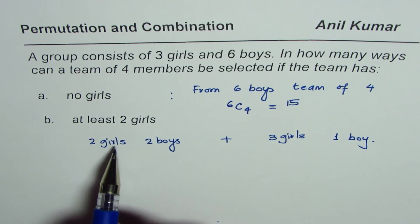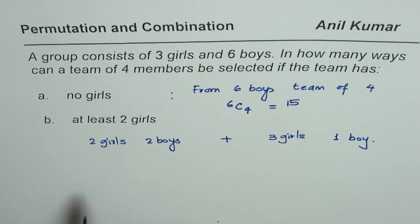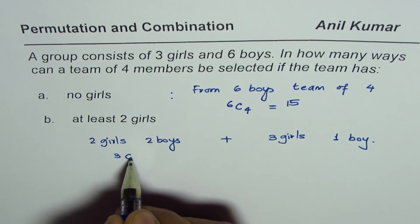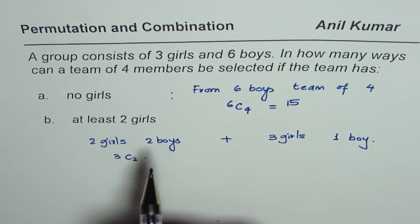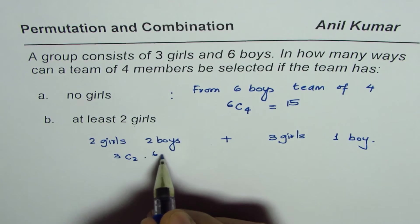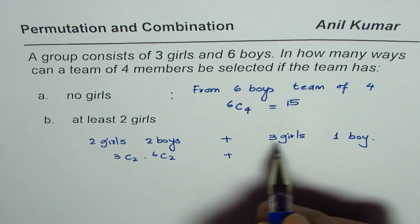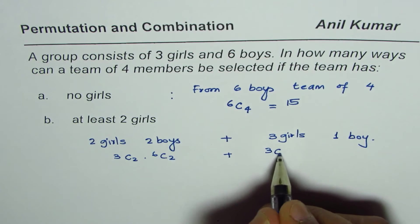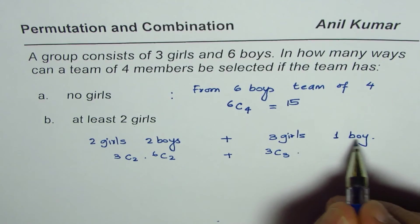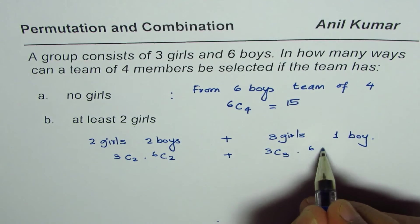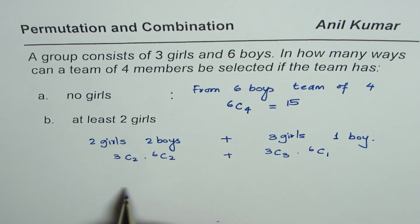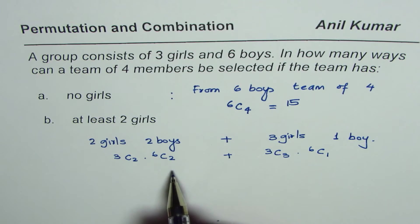Now you need to select two girls out of three. So that is three C two times two boys out of six, six C two, plus three girls out of three. That means three C three times one boy out of six boys, six C one. And that should give you the answer.